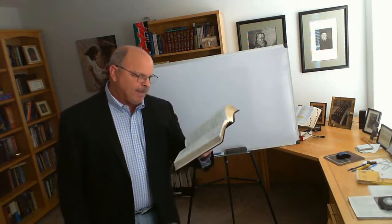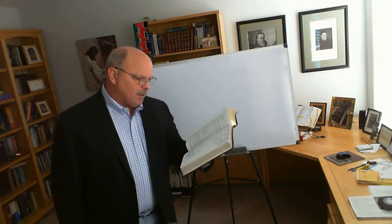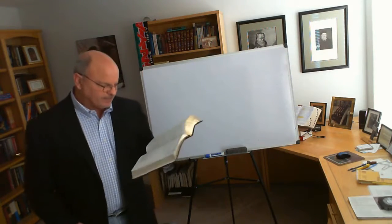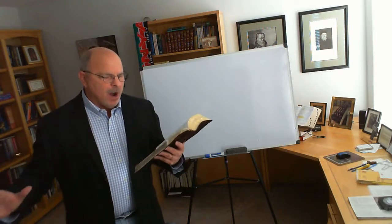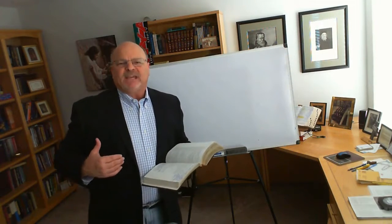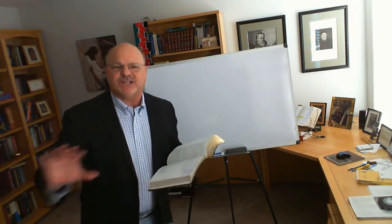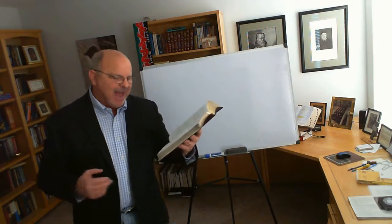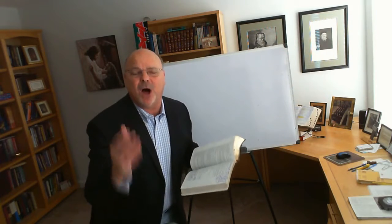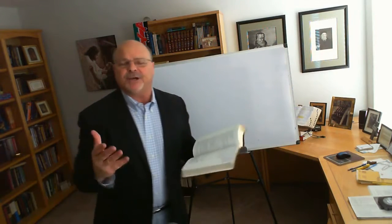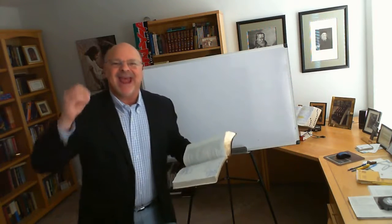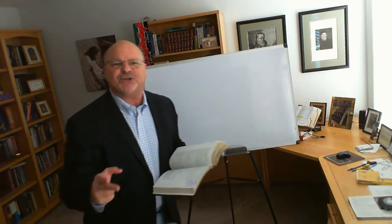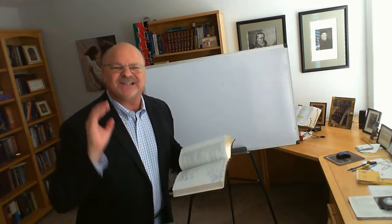Romans chapter 3. Let's start in verse 21. But now apart from the law, that is without the law, even before the law came in, as Paul is going to teach in Romans 4, Abraham was justified by faith. Apart from the law, the righteousness of God has been manifested being witnessed in the law and the prophets. Right there in Genesis, Abraham believed God and it was counted to him as righteousness. Genesis 12, 13, 14, 15, 17, and 22.